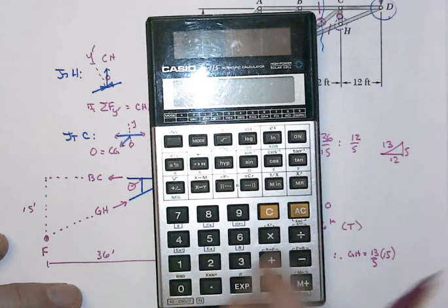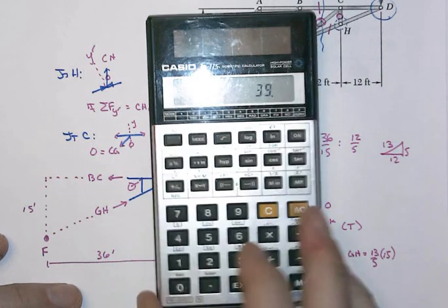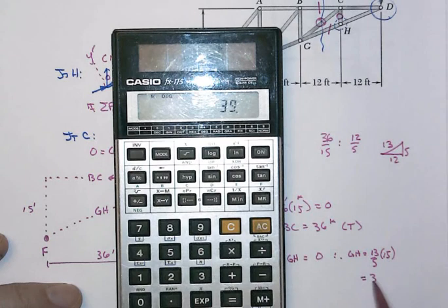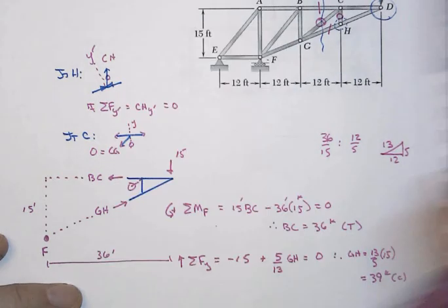And, when you know that's a nice, pretty little number, that's 39 kips, and that's in compression, as shown. And the plus sign just verifies that.